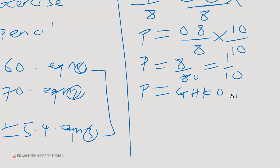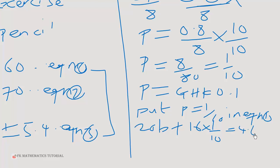Then we can now find the cost of one exercise book by putting P equals 0.1 in one of the equations. So I'm going to pick equation 1. So put P equal to 1 over 10 in equation 1. So that will give us 20B plus 16 times 1 over 10 is equal to 4.6. When you multiply through by 10, you get 200B plus 16 is equal to 46.